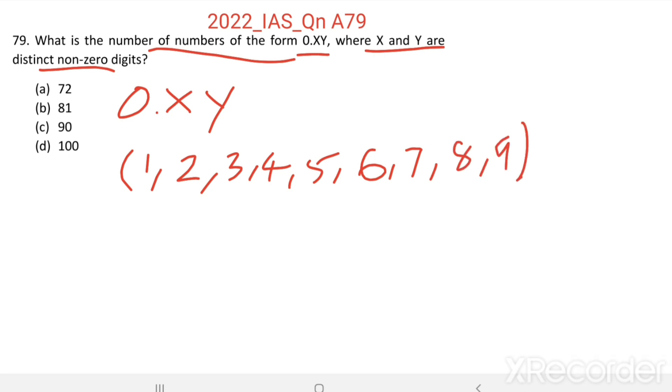There are a total of 9 non-zero digits. If we take 2 digits from these 9, suppose we take 4 and 8, then the numbers in the form 0.xy are 0.48 and 0.84.